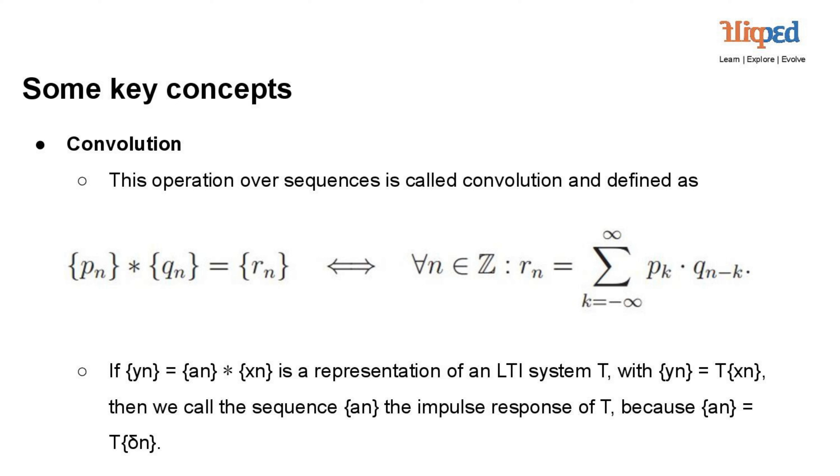Mathematically, r(n) equals sigma p(k) into q(n-k), for k equals minus infinity to infinity.